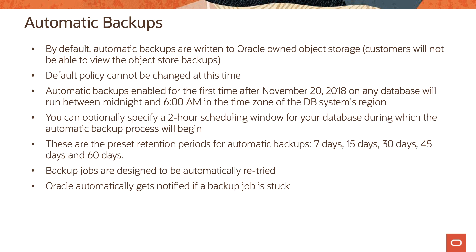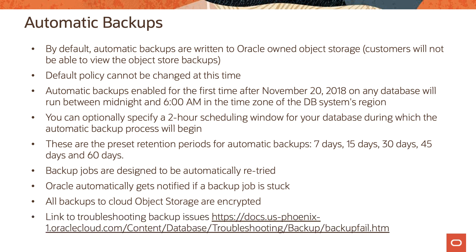The preset retention periods for automatic backups are 7 days, 15 days, 30 days, 45 days, and 60 days. Backup jobs are designed to be automatically retried, and Oracle is automatically notified if a backup job is stuck. All backups to cloud object storage are encrypted. There is a link at the bottom of the slide with more information on troubleshooting backups in case a backup job fails.